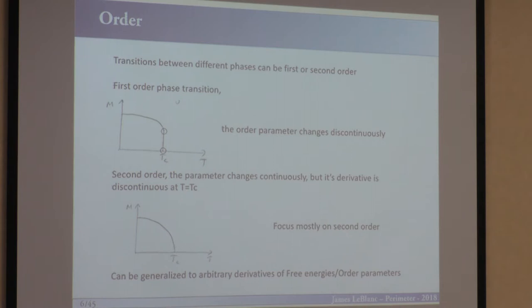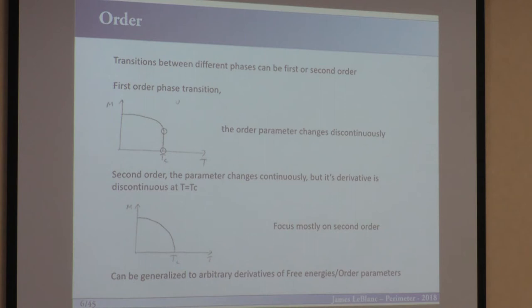It's really important to establish what I mean by the order of a phase transition. Transitions between phases can be first, second, or higher order. A first-order phase transition has a discontinuous jump in the observable — it goes from a finite value to zero very quickly. A second-order phase transition transitions continuously, but its derivative is typically discontinuous at the temperature at which it hits zero. Higher-order transitions are possible but rarely encountered.